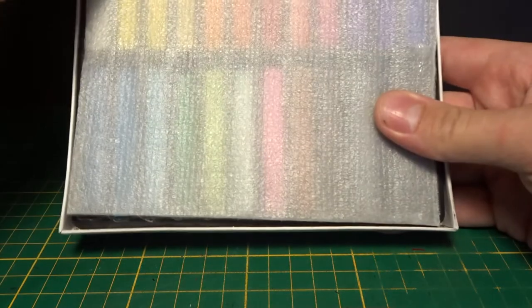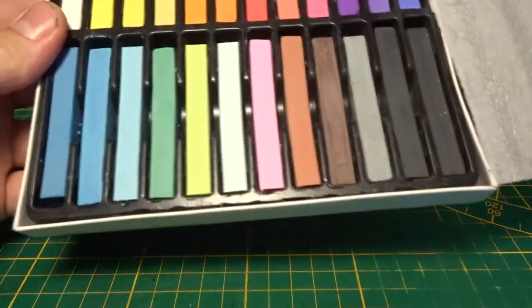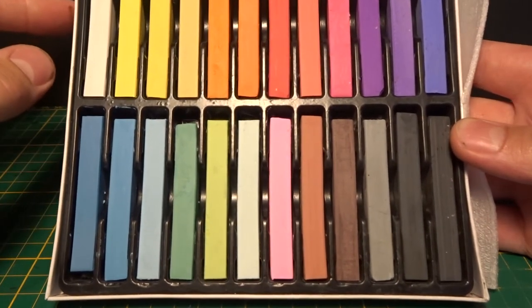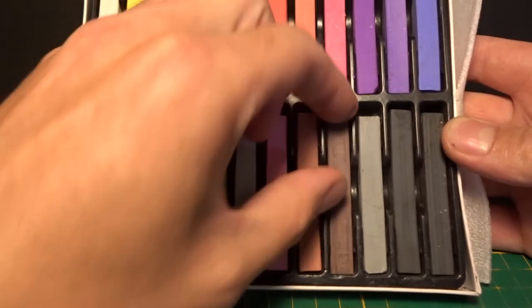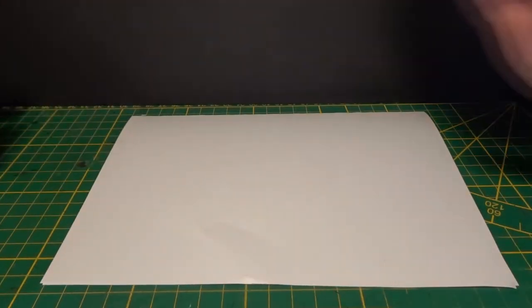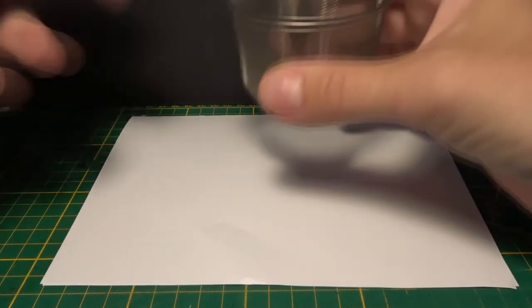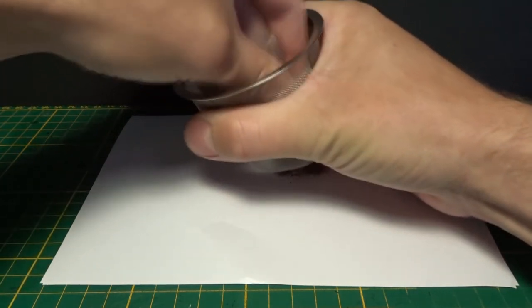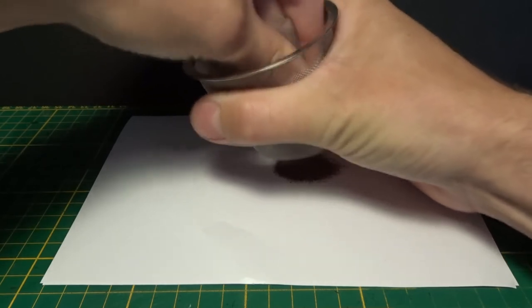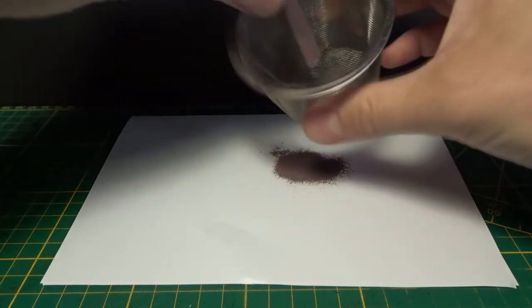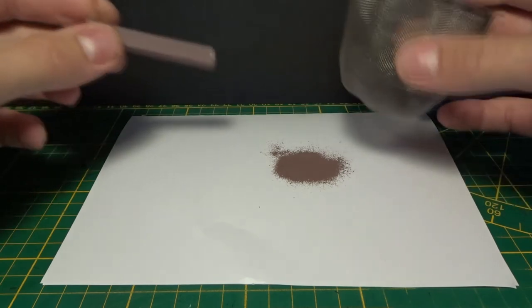So you get a really good range of colors and most of them you're not going to use I think, but we will try this brown one. What I'm going to do is I take a sheet of paper and a sieve, and then I grind through the sift just like this.